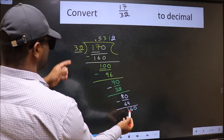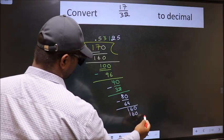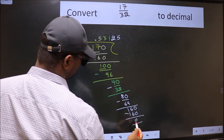160. When do we get 160 in the 32 table? 32 times 5 equals 160. Now we should subtract. We got 0.